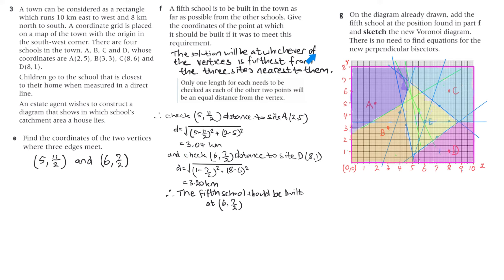One vertex gives 3.04 km and the other gives 3.20 km. The solution is at whichever vertex is furthest from the three surrounding sites, so the point (6, 7/2) is furthest. The fifth school should be built at (6, 7/2). I don't have the answers from the back of the book for this one, so we might have to change it later.